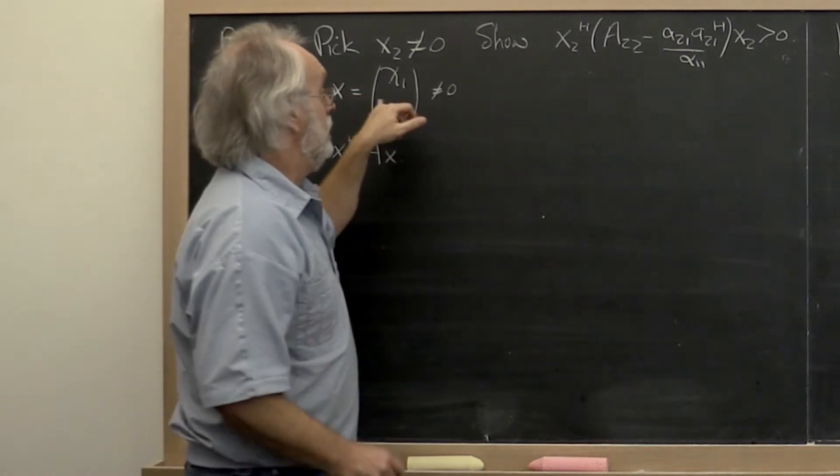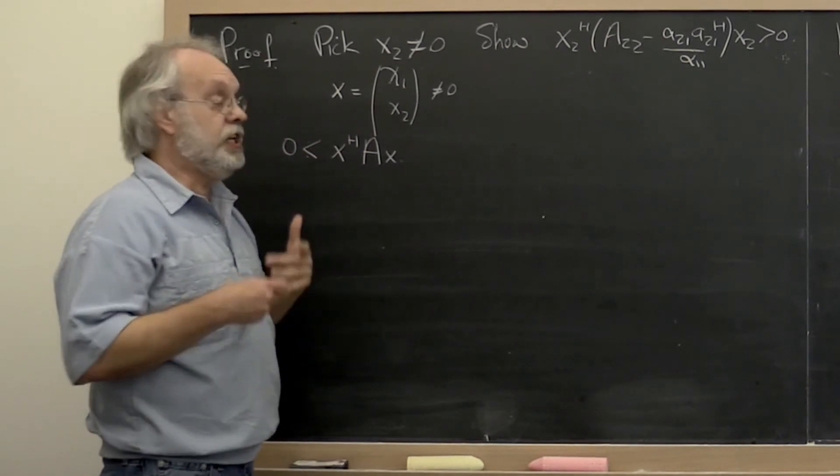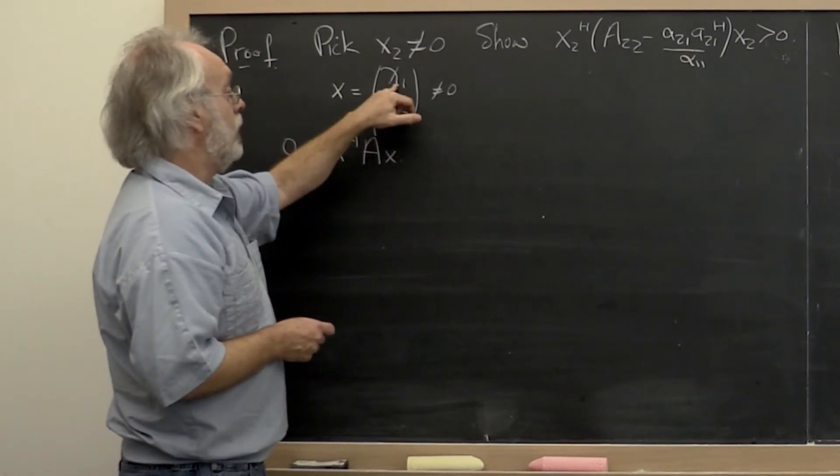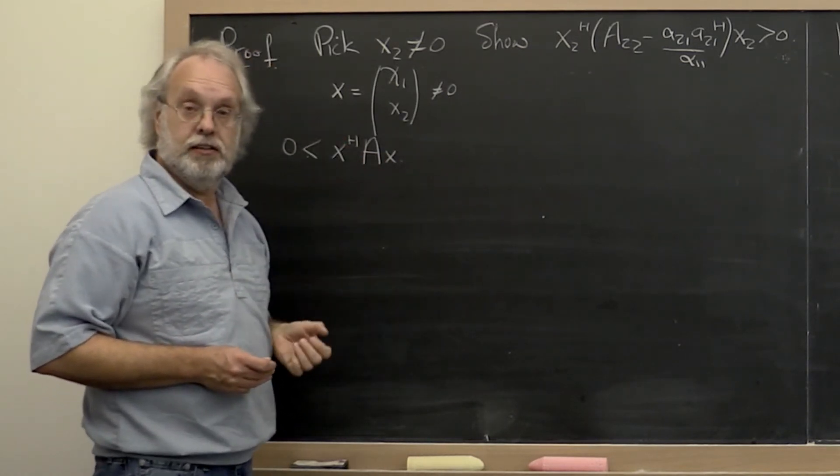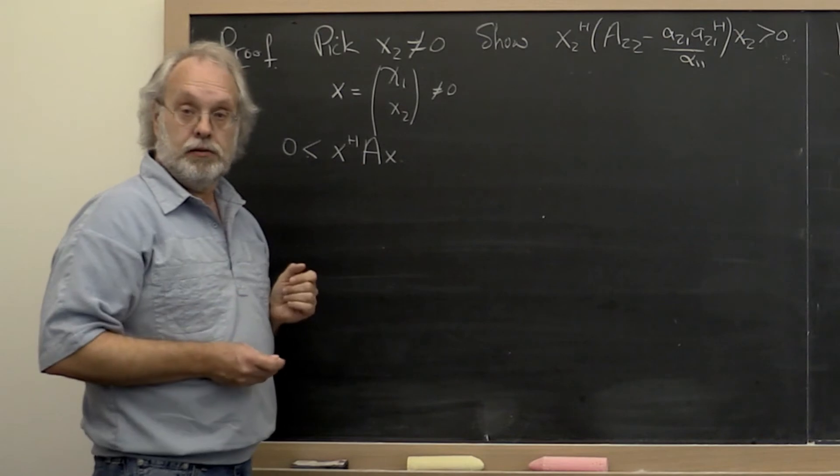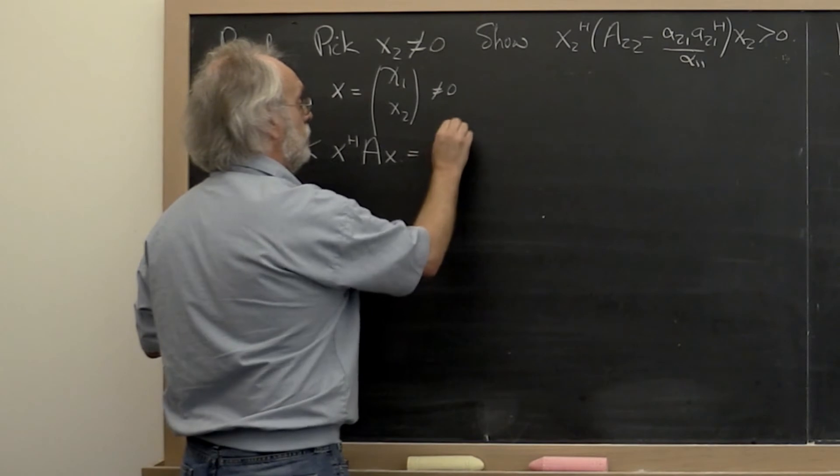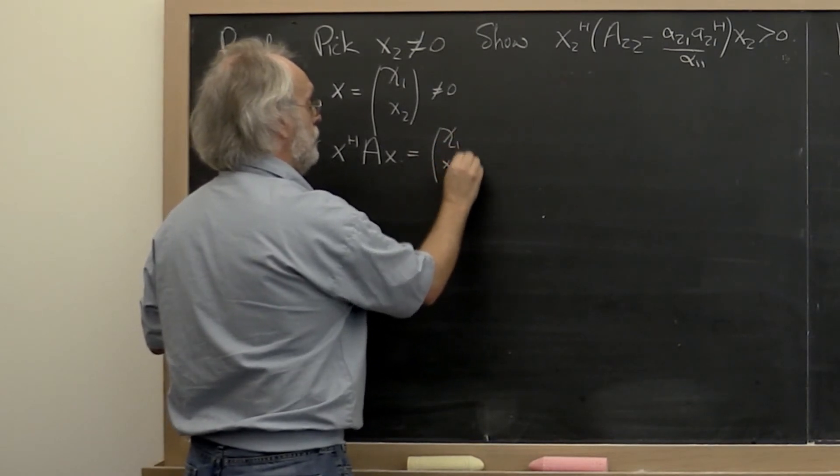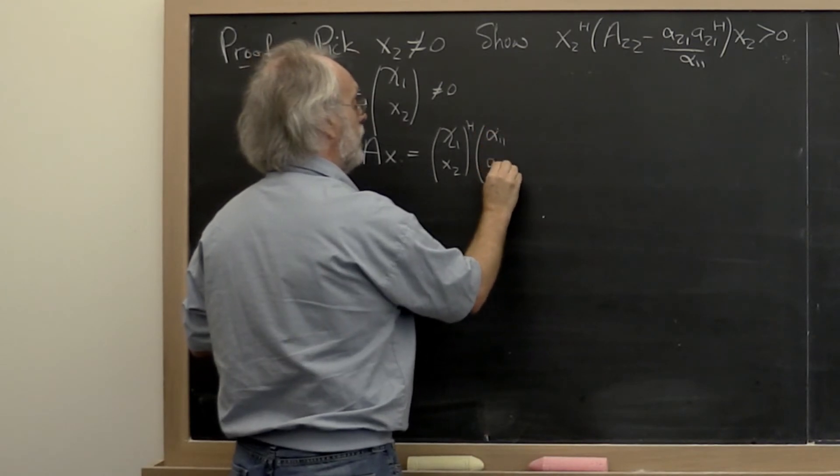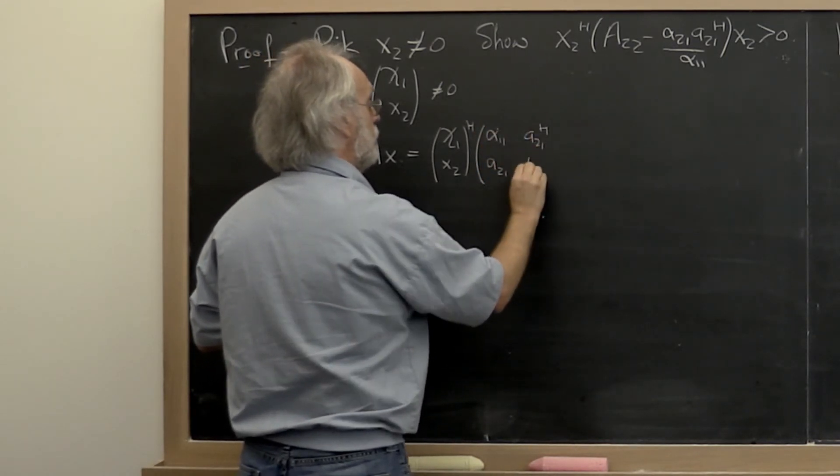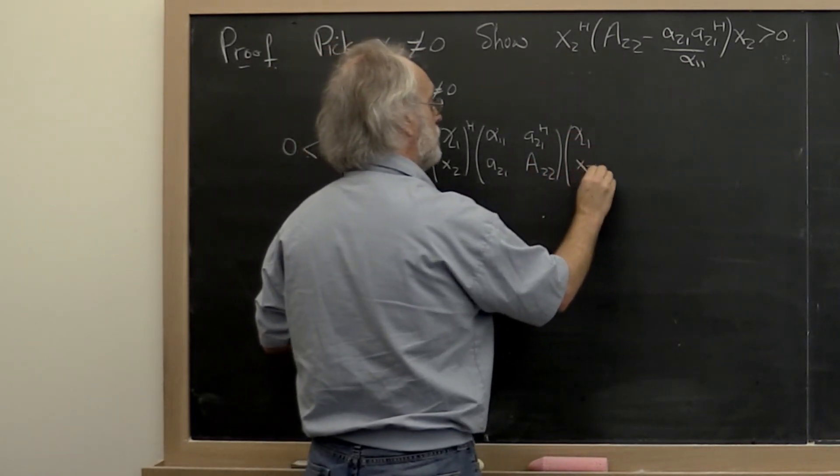And the key is to pick our chi 1 just right. So to get to the point where we can pick our chi 1 just right, we're going to have to push through a little bit. And then we're going to have to scratch our head. And then we're going to have to be clever. So let's see what comes out. Well, this here is just equal to chi 1, x2 Hermitian transpose times the partition matrix alpha 1 1, A 2 1, A 2 1 Hermitian transpose, A 2 2 times chi 1, x2.